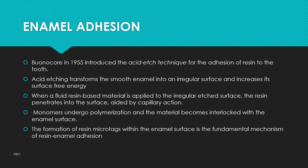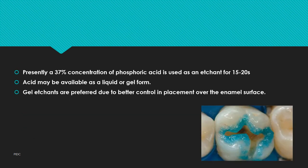After acid etching and placement of the bonding agent, there will be micro-porosities into the enamel. The resin — that is, the bonding agent — flows in and creates enamel resin microtags. That is the mechanism of resin-enamel adhesion.